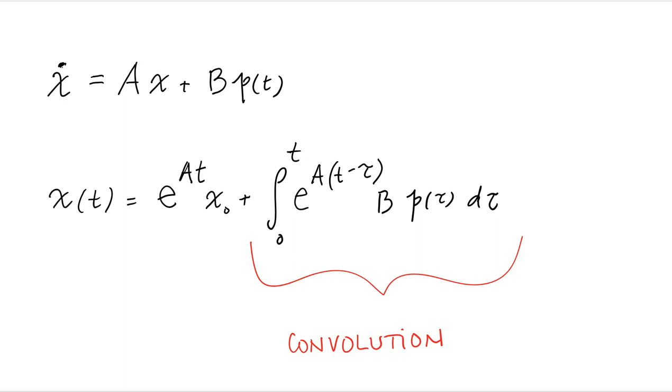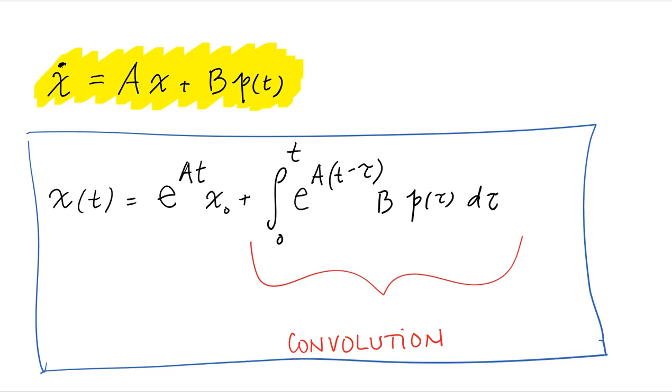And that equation can be solved exactly. And the answer is this term right here. The first term is the autonomous part. It's simply the initial condition propagated in time, initial condition of T equals zero. And the second part is the effect of P of T. And that term is a multidimensional convolution. So it's basically convolution like what we define in single degree of freedom systems. But now, the impulse response is not just a scalar function. It's a matrix function. And it's e to the A, T minus tau, B.